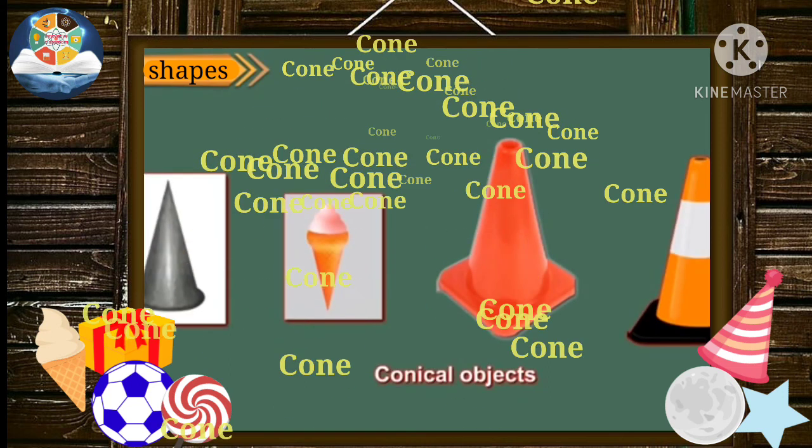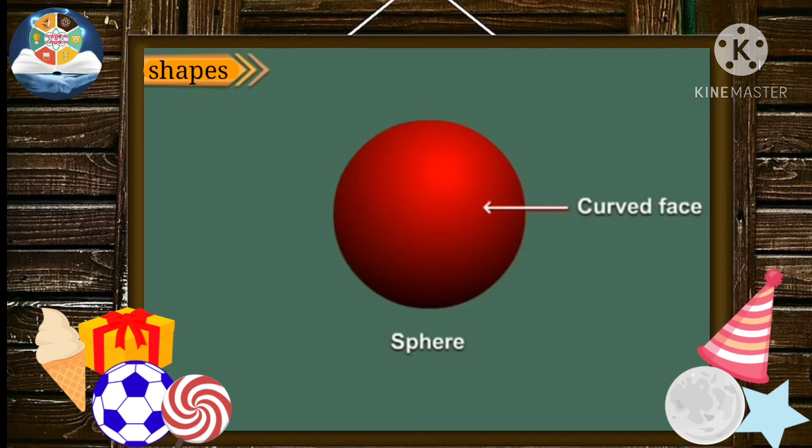Now, observe this shape. It looks like a football. It has no vertex and no corners. It has only one curved face. It is called a sphere.